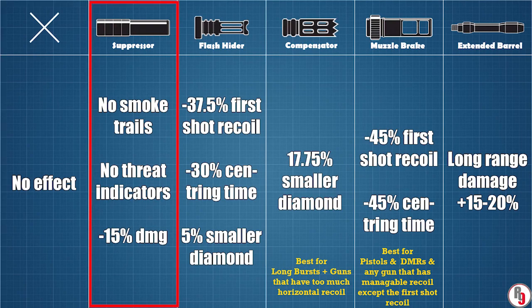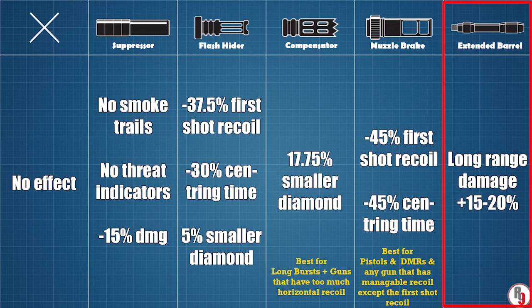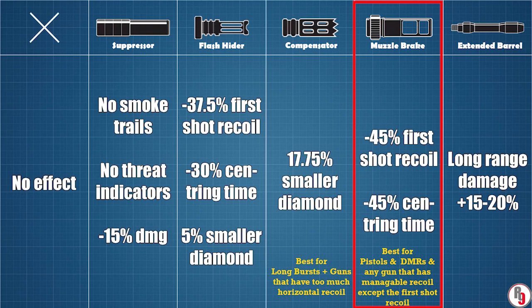No attachment has no effect on your gun, so never use it. The suppressor removes smoke tracers and thread indicators but reduces gun damage by 15%. The benefits don't outweigh the negatives — Rainbow Six is not a stealth game, so removing smoke tracers and thread indicators doesn't help much. Suppressor also reduces muzzle flash, which can be problematic on night maps. Extended barrel increases gun damage by 15–20%, but only at very long range — over 20 meters — which is why it's useless for most gunfights.